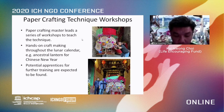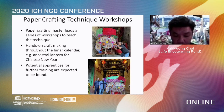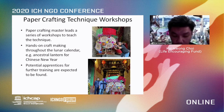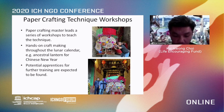The fifth domain is traditional craftsmanship. The corresponding activities are paper crafting technical workshops. A paper crafting master in Yuen Long leads a series of workshops to teach the technique. Throughout the Lunar New Year, the hands-on craft making includes an ancestor lantern for Chinese New Year, just shown on the slide. For the Empress of Heaven festival, there will be a flower curtain, and for the Yuen Long Gold festival, face painting of the deity will be carried out. From these workshops, potential apprentices for further training are expected to be found for the craftsmanship.